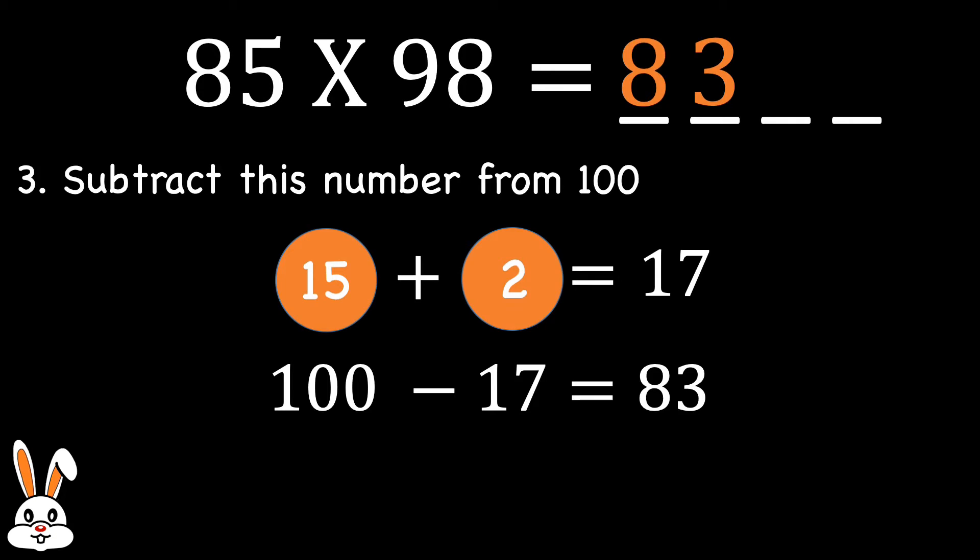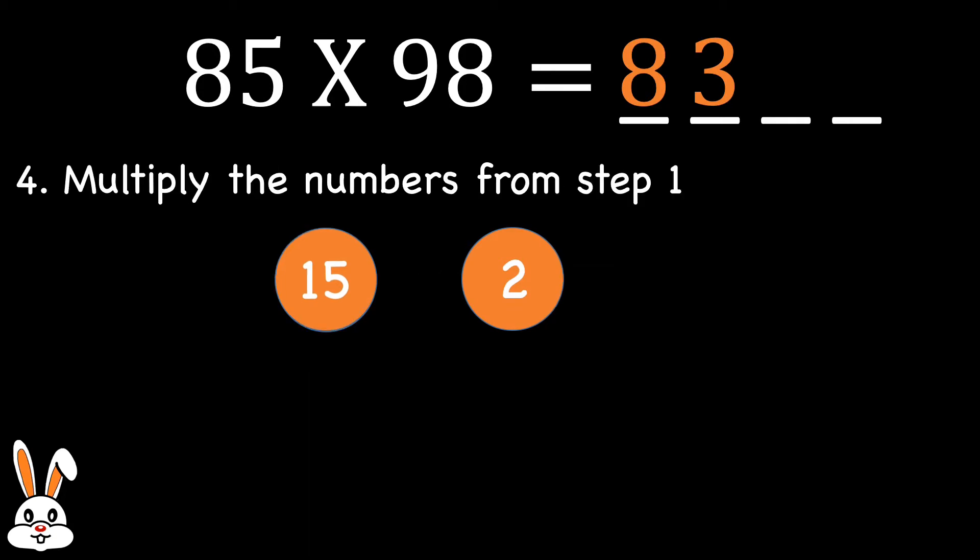Now for the final step number 4, we multiply the numbers we got from step 1. So 15 multiplied by 2 gives us 30. And these two are the final two digits of the solution. So the final answer should be 8330.